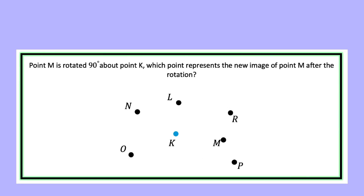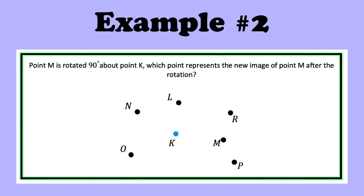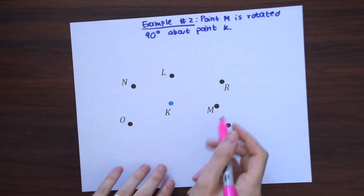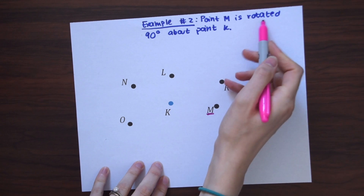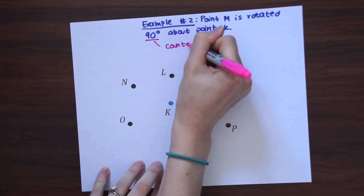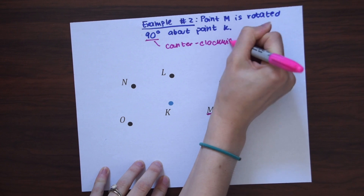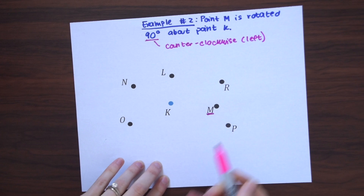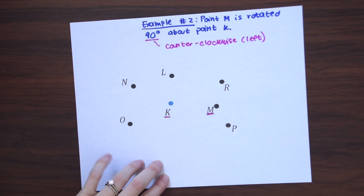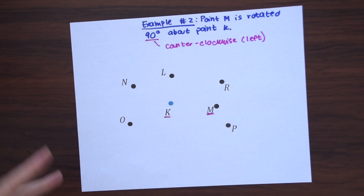In our next example, point M is rotated 90 degrees about point K. Which point represents the new image of point M after the rotation? This time we don't have a coordinate plane — just dots. Point M is what we're rotating, 90 degrees positive, so we're going counterclockwise to the left, rotating about point K as our point of origin. Without a coordinate plane, we can't just draw an axis — we need some tools: a protractor and a ruler.